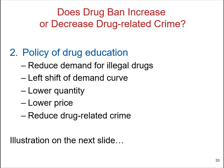We can also consider a second policy option: improving or increasing spending on drug education. Some governments may introduce, for example, a part of the curriculum dedicated to educating young children and pupils on the negative effects and consequences of abusing drugs — cocaine, heroin, or other illegal drugs. This may eventually have a positive effect. The result of a drug education policy is reduced demand for illegal drugs, as young kids grow up making informed decisions due to the education they received in childhood.